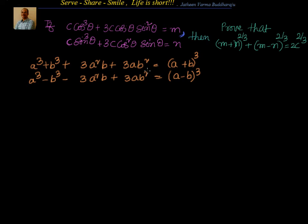We have been given: c cos³θ + 3c cosθ sin²θ = m. And also c sin³θ + 3c cos²θ sinθ = n. We have to prove that (m+n)^(2/3) + (m-n)^(2/3) = 2c^(2/3).